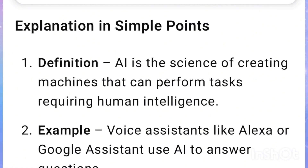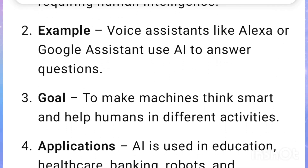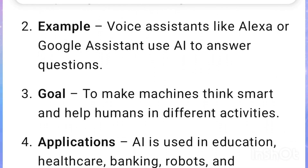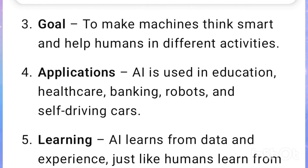Definition: AI is the science of creating machines that can perform tasks requiring human intelligence. Example: Voice assistants like Alexa or Google Assistant use AI to answer questions. Goal: To make machines think smart and help humans in different activities.